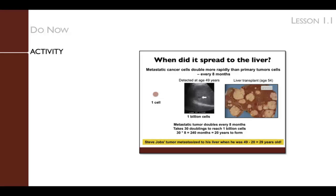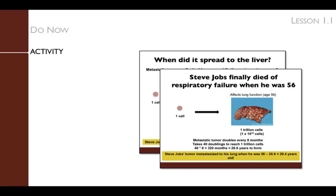Now we ask: when did the tumor spread to the liver? The liver cancer was detected when Jobs was 49 years old. Since there are 1 billion cells in a 10 mm tumor, it will have doubled 30 times. Importantly, metastatic tumors double faster than primary tumors — every 8 months rather than 10. Therefore, 30 times 8 equals 240 months, or 20 years. Since he was diagnosed at age 49, the liver metastasis first appeared when he was 29 years old. The tumor also metastasized to the lung, and Jobs eventually died of respiratory failure due to lung metastasis at age 56. Students should back-calculate when the tumor metastasized to his lung, given that 1 trillion cancer cells were found there.